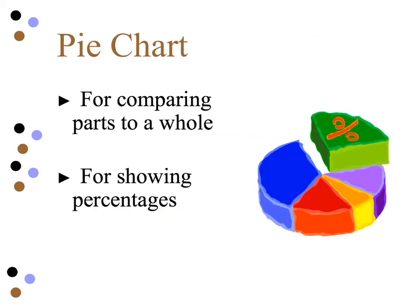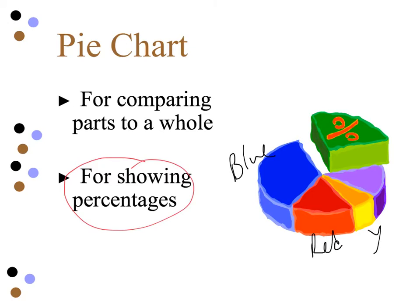Another type of graph is a pie chart. Pie charts are excellent for comparing parts of a whole — great for showing percentages. For instance, you might show the percentage of students wearing different colored t-shirts on a given school day: blue shirts here, red shirts here, yellow shirts there. There is a whole — in this case the whole student population — and you can see how it all breaks down as parts of that whole.